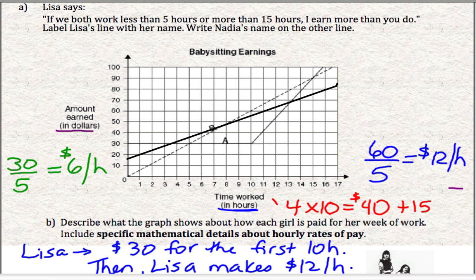So what I might say is something like, well, if you need a babysitter for up to 5 hours, then Nadia is the person you should hire. And then from 5 hours up to about 13 hours, if you need somebody in that range, then Lisa here is the cheapest because her line is the lowest.